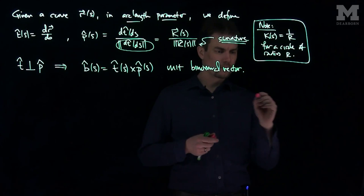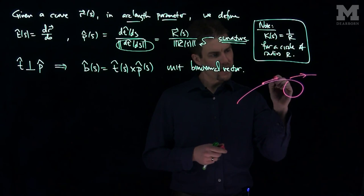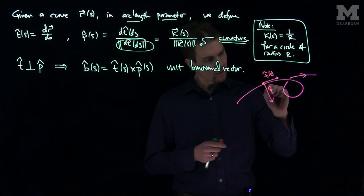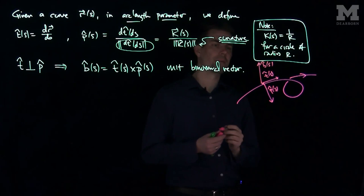So for a curve like so, we can have a t-hat, a unit tangent vector tangent to the curve, a p-hat, a normal, and then we can cross these and get another vector, b-hat of s, the unit binormal vector.